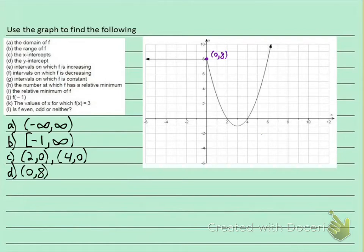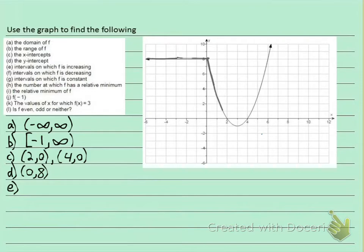Part E: intervals on which f is increasing. Increasing means going from left to right, the graph goes up. Starting from the left: the graph is constant — not increasing, not decreasing — until I get to a certain point. Then it starts decreasing. Continuing left to right, it decreases all the way down, then at a low point it starts going up — increasing — and keeps increasing forever.